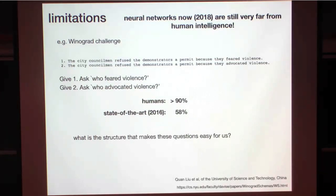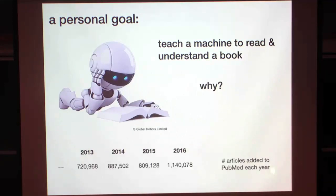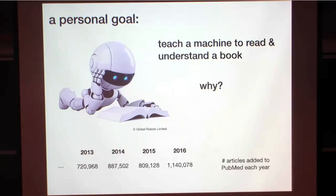What interests me is what is the structure that makes these types of questions very easy for us but not for deep neural networks. A personal goal of mine is really to teach a machine to read and understand a book. Why? These are the number of articles added to PubMed each year — it's on the order of a million articles a year and growing. There's no way a human can read anything close to that. But if we can teach a machine to read and understand one paper, it's not very far from doing a hundred, a thousand, a million. I think this is the future.